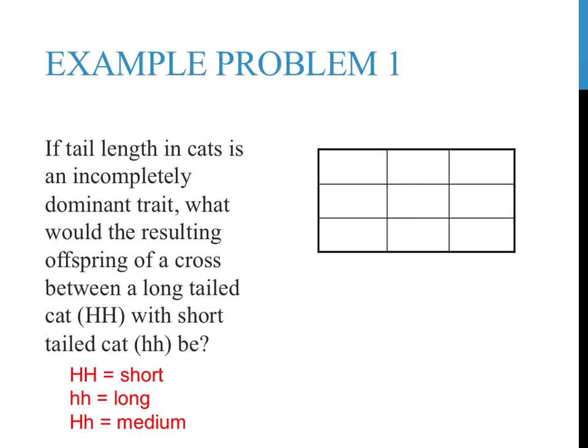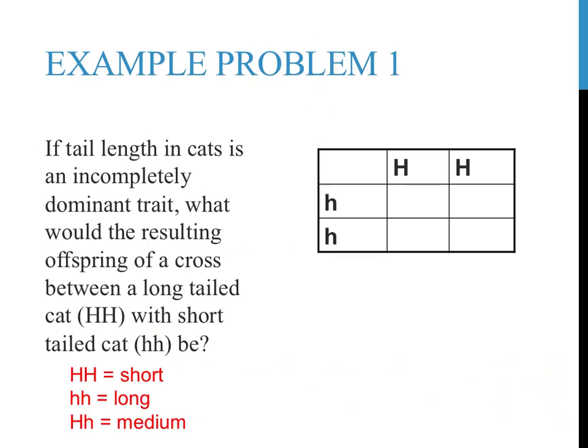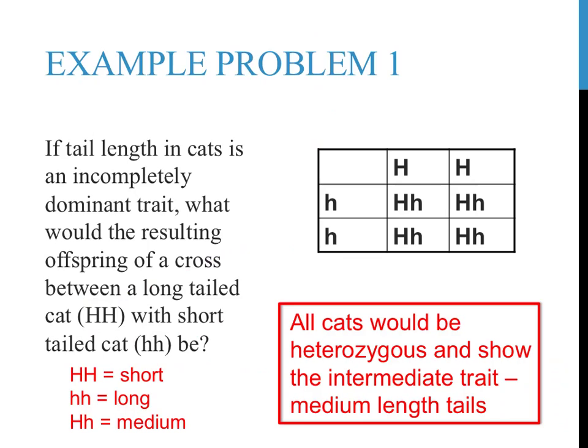Now that we have determined what the different genotypes will produce in terms of phenotypes, we can set up and carry out the Punnett square, just as we have for other sorts of problems. Step one: place the genotypes of the parents on the outside of the Punnett square, as indicated in red. Step two: fill out the Punnett square, just as you have for previous examples. After filling out the Punnett square, the result is that 100% of the offspring would be heterozygous for this trait. Since you made a key before completing this problem, the interpretation of the results is pretty easy — all cats are heterozygous, so they would all have the intermediate trait and medium length tails.